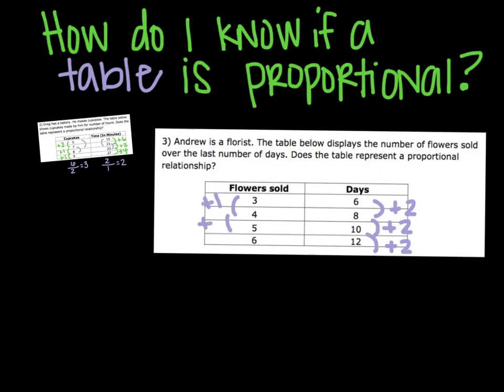And this one is actually increasing every single time. So my change is not changing at all in between anything. This is what you've seen many, many times. My change in y is 2. My change in x is 1. So my rate of change, or my slope, is 2, or another way to say that would be your constant is 2. And this would then be proportional.